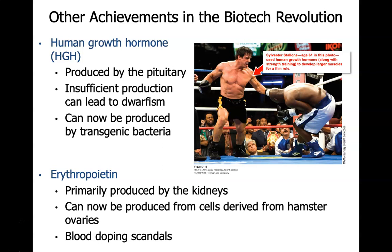Before using transgenic bacteria, it was necessary to extract human growth hormone from the pituitary glands of human cadavers, which was very inefficient and very expensive. One unintentional side effect is that athletes now have access to this human growth hormone, which has caused scandals in several different arenas such as swimming, cycling, and others.